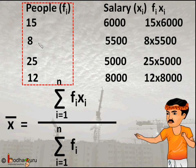x₂ is 5500 and f₂ is 8, means 8 people earned 5500 rupees salary. So we calculate the product of frequency and salary for each xi, that is for each row, like 15 × 6000 because 15 people earned 6000 rupees per month.